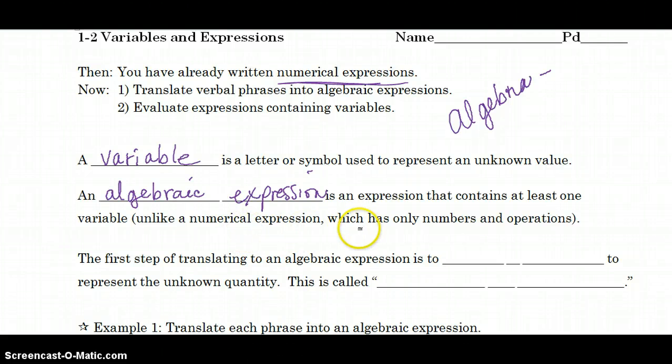Unlike a numerical expression, which only has numbers and operations. So, for example, numerical expressions, 2 plus 3, all of that times 4, would be what we did yesterday. To make it an algebraic expression, it would be 4 times 2 plus x, where we now have a letter in our problem. So that makes it go from just a numerical expression to an algebraic expression. It doesn't even have to have that much. It could just be something as simple as 2x, or even x turns it into an algebraic expression.